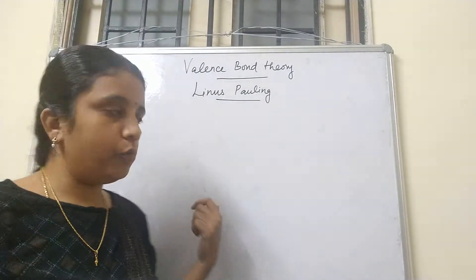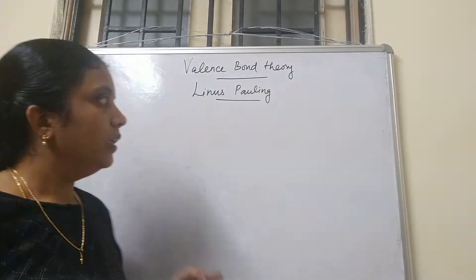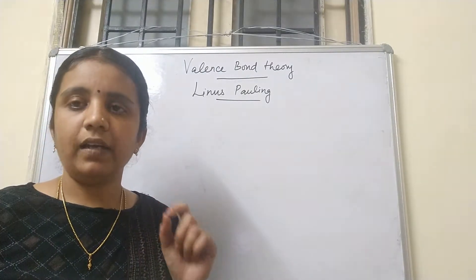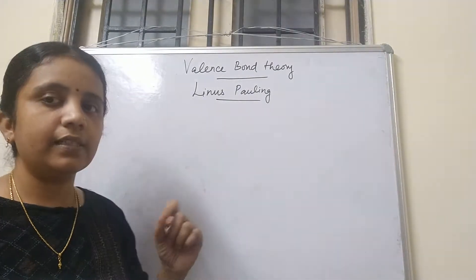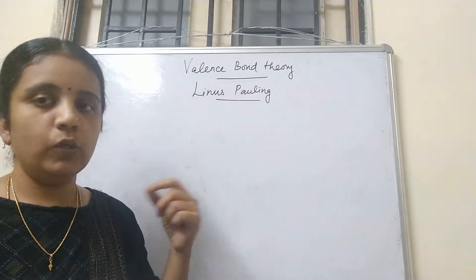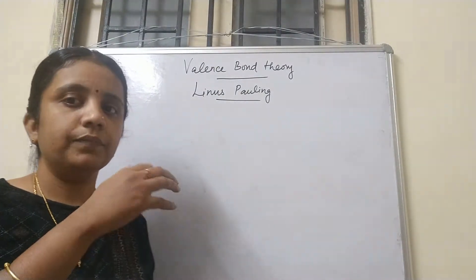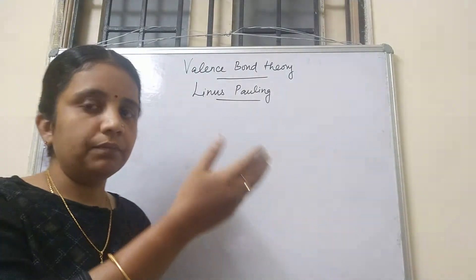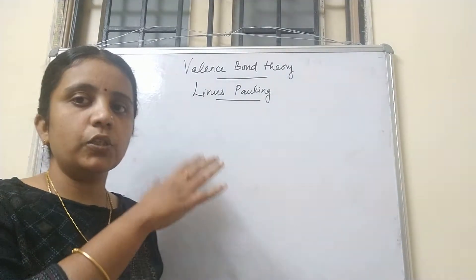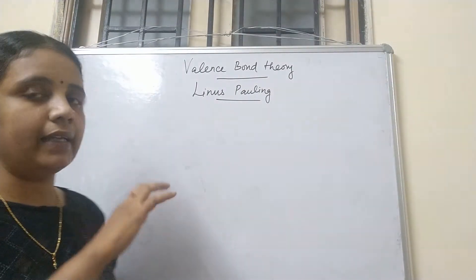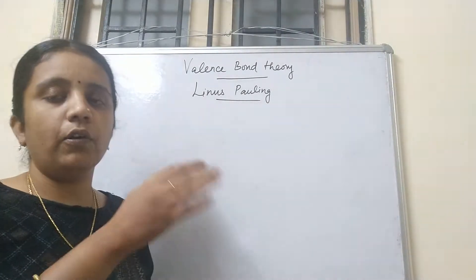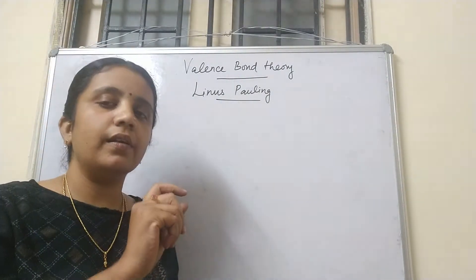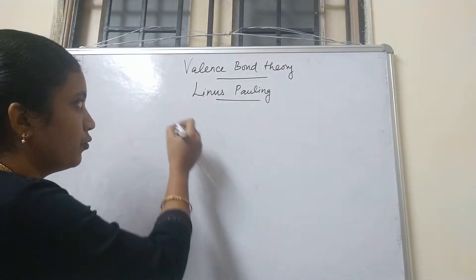In valence bond theory, what he said about coordination compounds is that in coordination compounds, the central metal ion accepts electron pairs from ligands to form coordinate covalent bonds. So valence bond theory considers coordinate covalent bond formation.